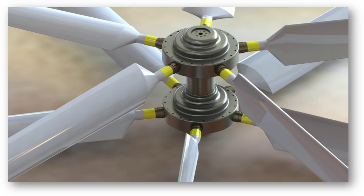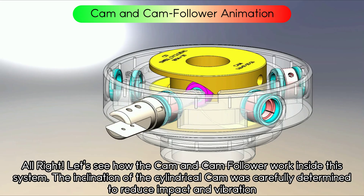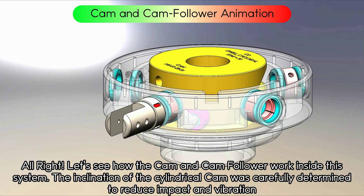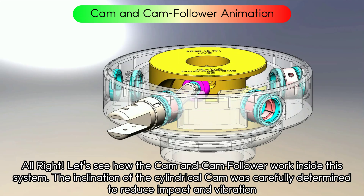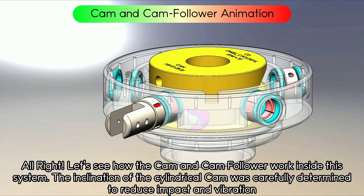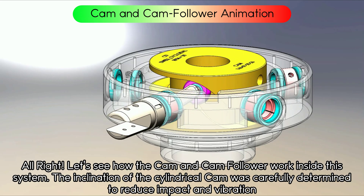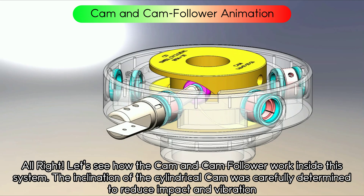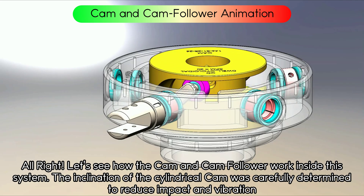This is the top view of a dual turbine with 10 blades. Let's see how the cam and cam follower work inside this system. The inclination of the cylindrical cam was carefully determined to reduce impact and vibration.